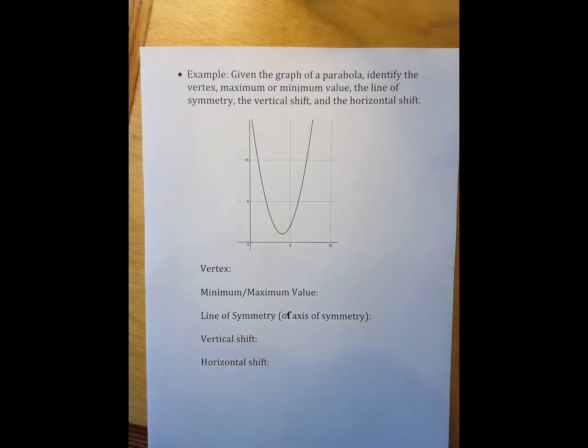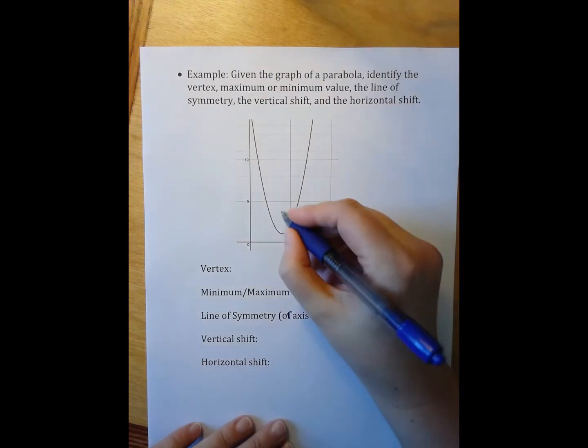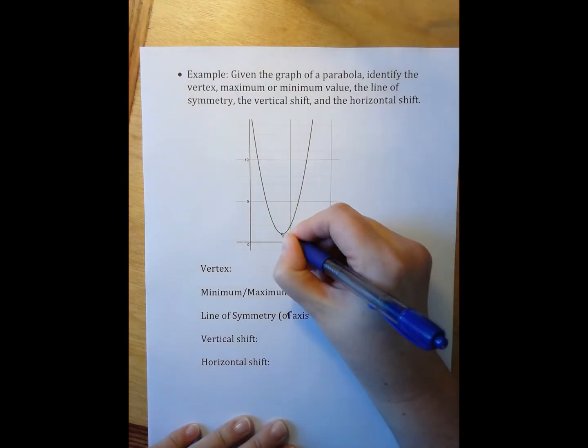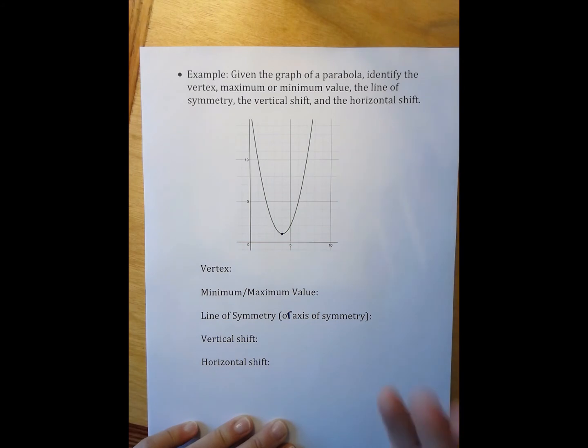So the first thing I'm going to look for here is the vertex. It is the piece of the parabola that kind of sticks out the most because it's the bottom or top. And in this case, it occurs right here and it is a bottom. So I can kind of fill in two pieces of information right away.